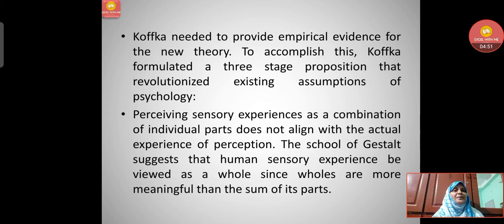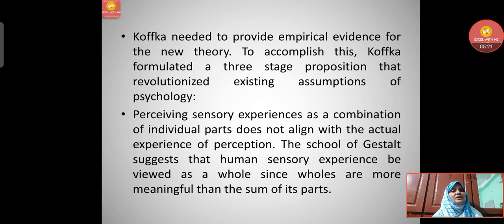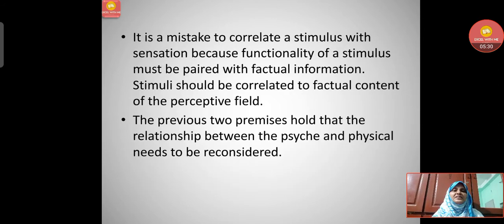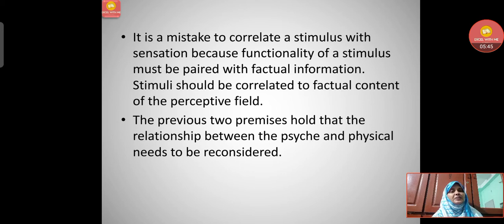Kofka needed to provide empirical evidence for the new theory. To accomplish this, Kofka formulated a three-stage proposition that revolutionized existing assumptions of psychology. First, perceiving sensory experiences as a combination of individual parts does not align with the actual experience of perception. Second, the school of gestalt suggests that human sensory experience be viewed as a whole, since wholes are more meaningful than the sum of their parts. Third, it is a mistake to correlate a stimulus with sensation because the functionality of a stimulus must be paired with factual information, and stimuli should be correlated to the factual content of the perceptive field.